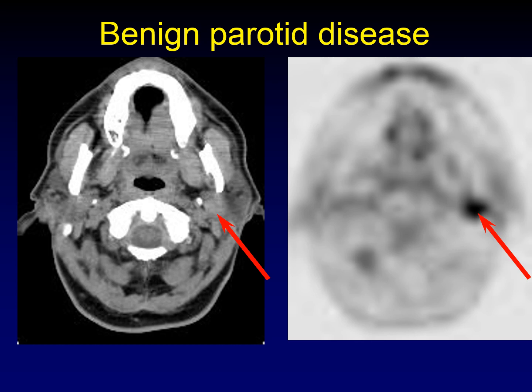Ironically, benign diseases of the salivary glands often have increased FDG avidity, producing false positives, while malignant salivary tumors give false negatives. You can't win in the setting of salivary tumors. For example, a benign oncocytoma of the parotid gland frequently has a lot of FDG avidity, as do Warthin's tumors. It can be very misleading.